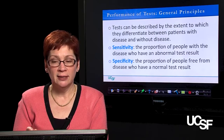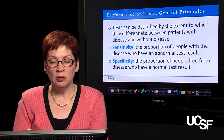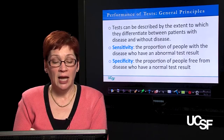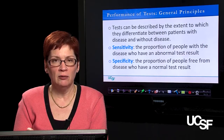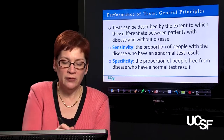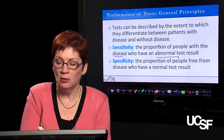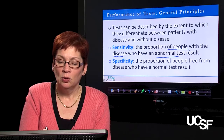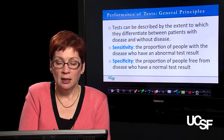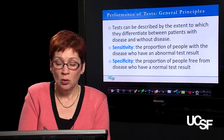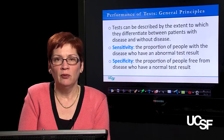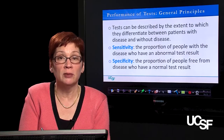Let's talk about performance of tests and general principles. Tests can be differentiated by the extent to which they distinguish between patients who have a disease and patients without the disease. There are two key characteristics: the first is sensitivity — the proportion of people who have the disease in question who also test positive for that disease, meaning the proportion of all people with disease who have an abnormal test result. Specificity describes the proportion of people who are free from disease who also test negative, or have a normal test result. These are inherent characteristics of the test before it's given to your patient, referring to the test's performance in general populations.